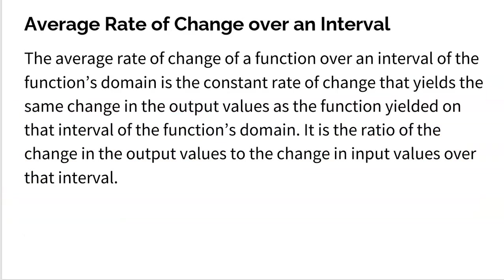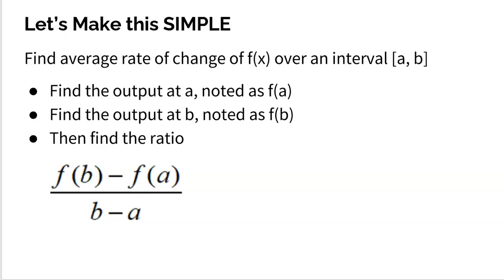Here is the official definition of the average rate of change. The average rate of change of a function over an interval of the function's domain is the constant rate of change that yields the same change in the output values as the function yielded on that interval of the function's domain. It is the ratio of the change in the output values to the change in input values over that interval. Kind of ugly, a little bit confusing — hard to understand if you read it once. Let's try to make this as simple as we can.